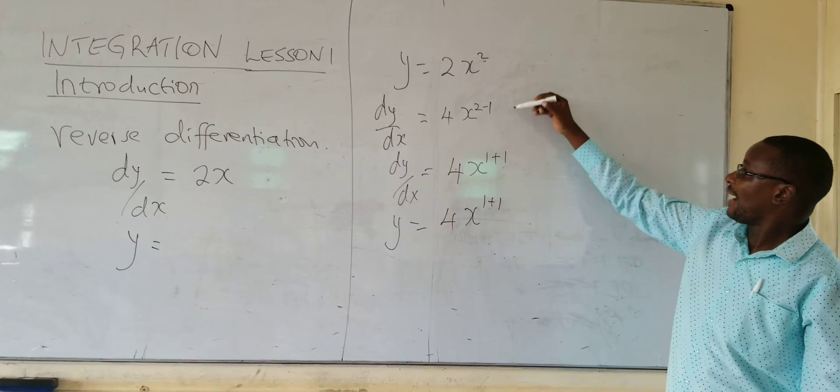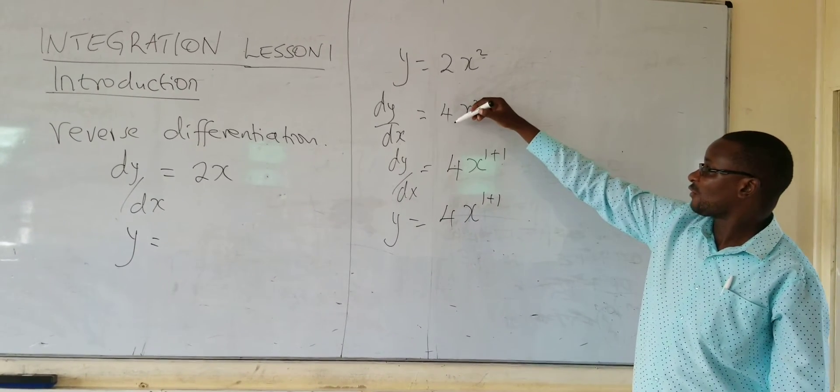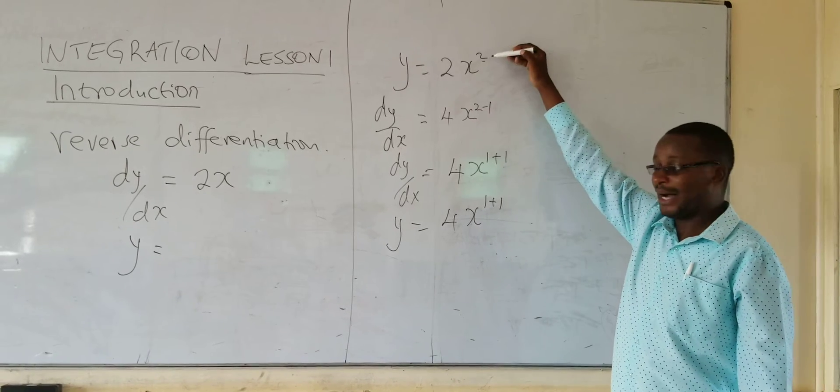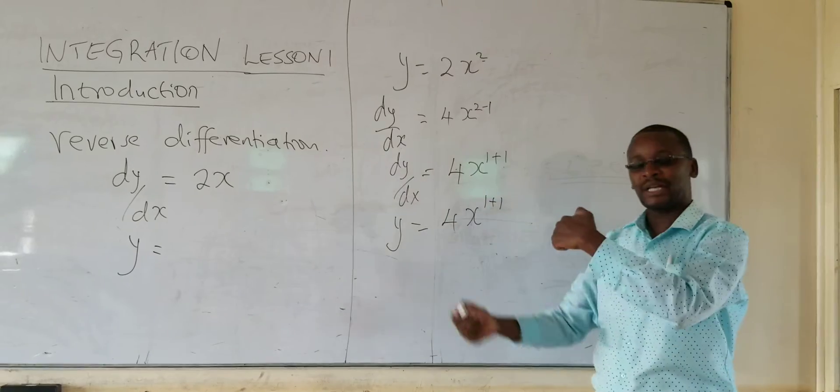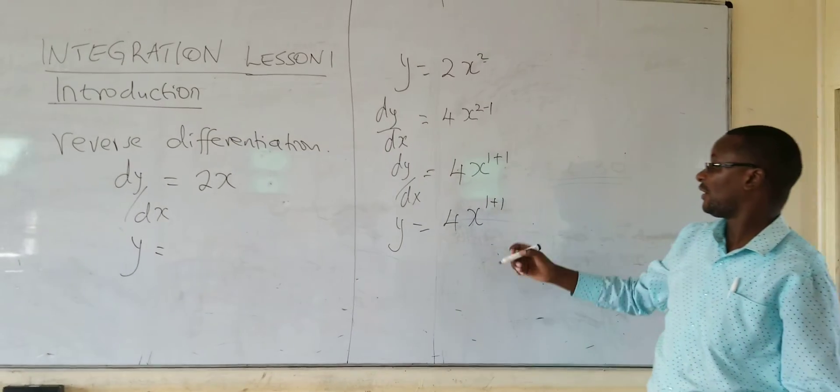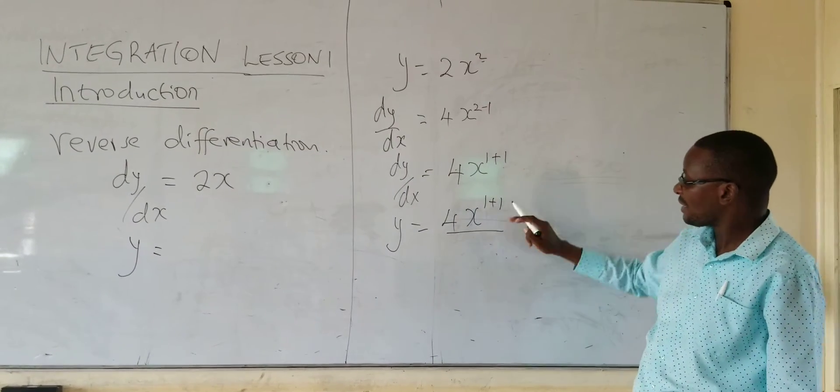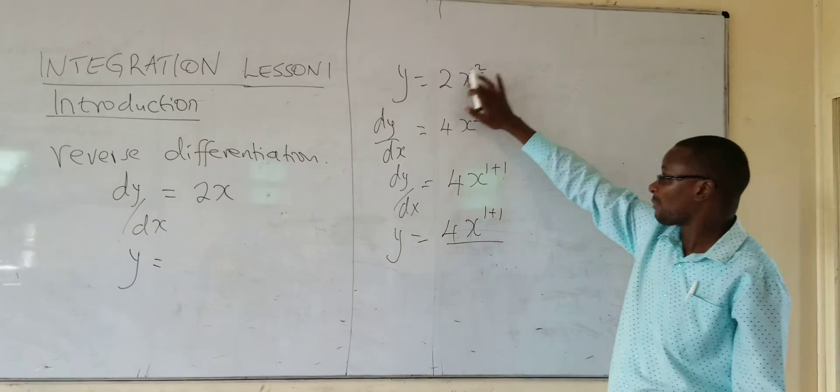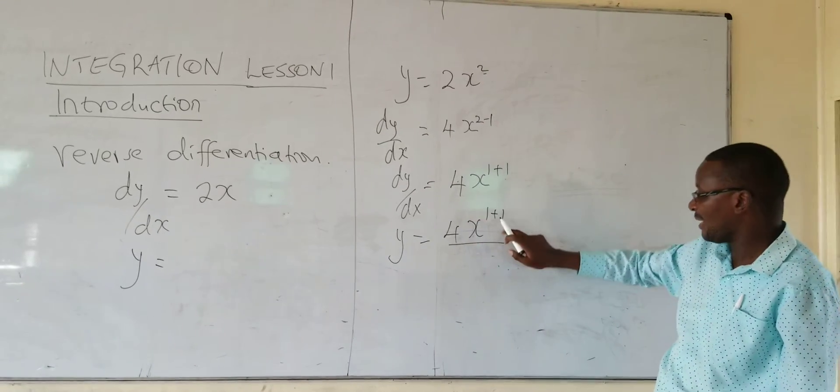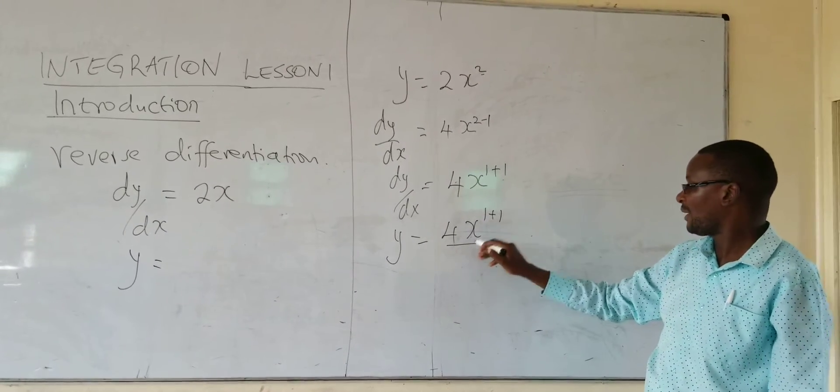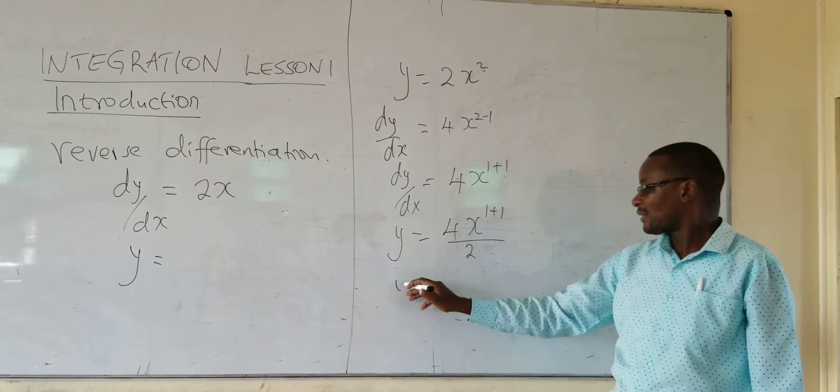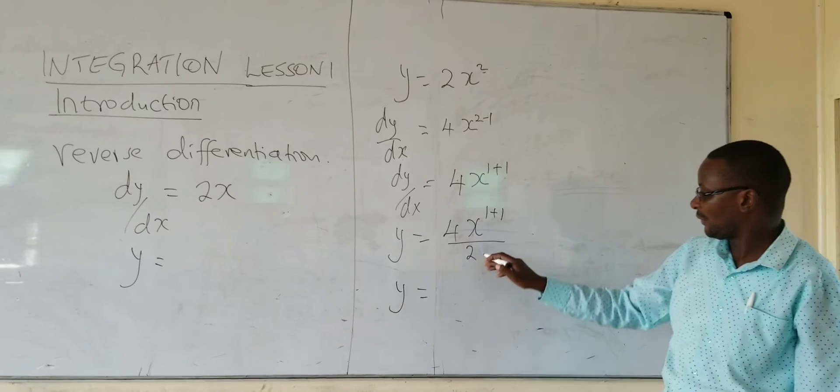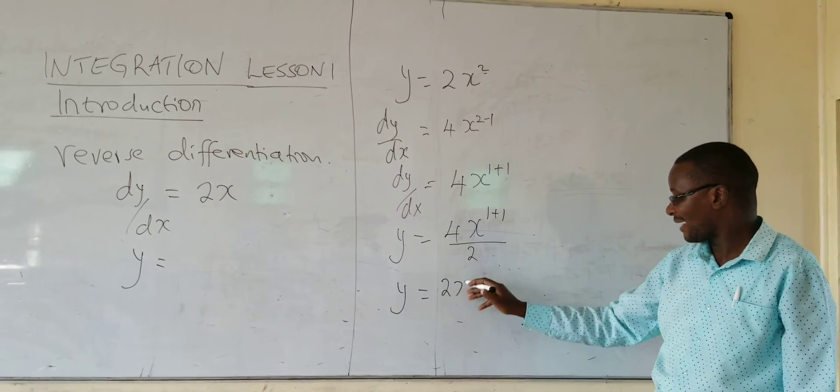Then to get this 4, we multiply the power with a constant. Now we do the reverse of multiplication, which is division. So we will divide now with the answer we get here. We had multiply with the power. Now we will divide with the power to do the reverse. So we divide by the answer, which is 2. So I will get y is equal to 2. We divide, you get 2x squared.